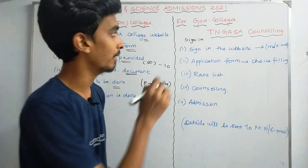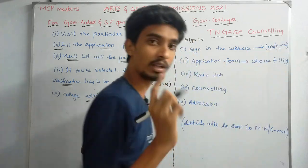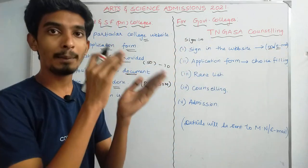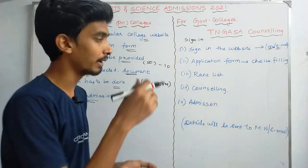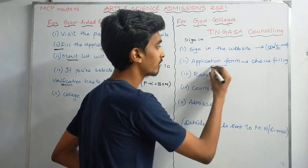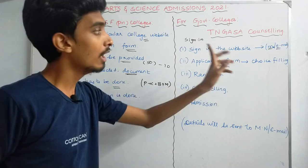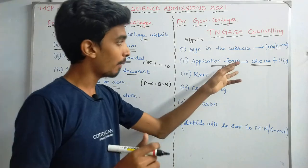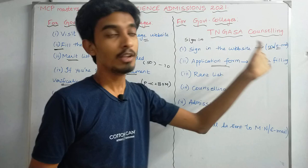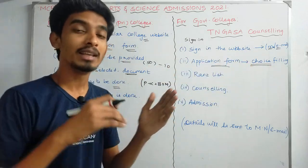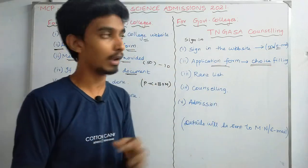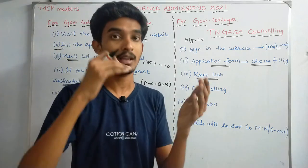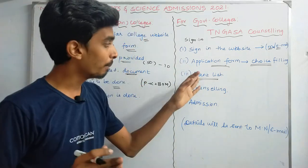The first procedure is the same. Next, visit the website, provide your mobile number and email. You can send all your details with your mobile number. Register to get your login ID and password. Then fill the application form, including choice filling, which is very important. You can choose how many colleges you want. The rank list is at the Tamil Nadu level.